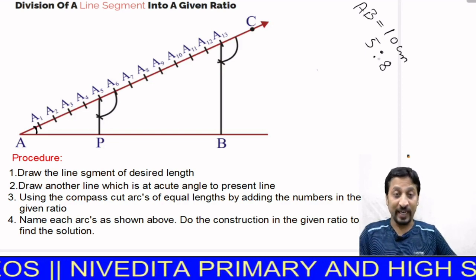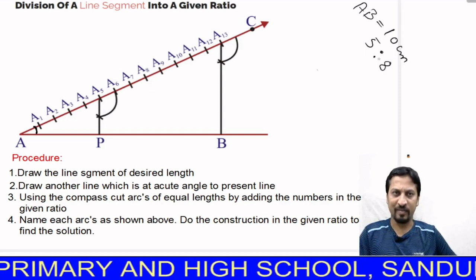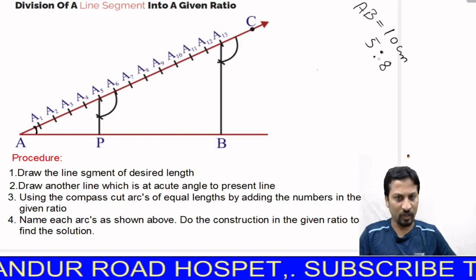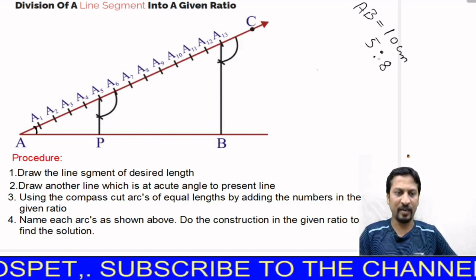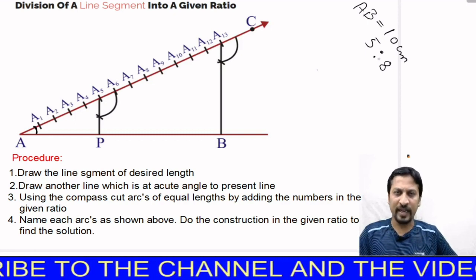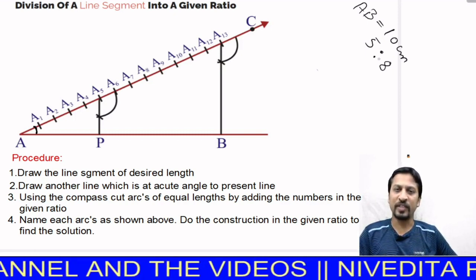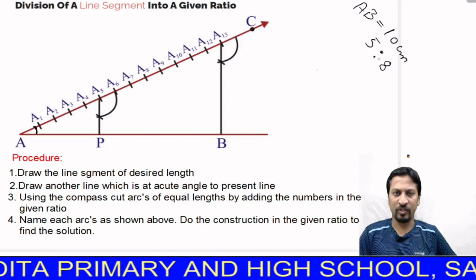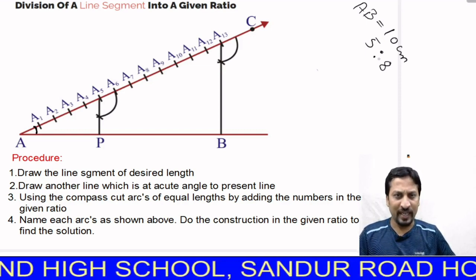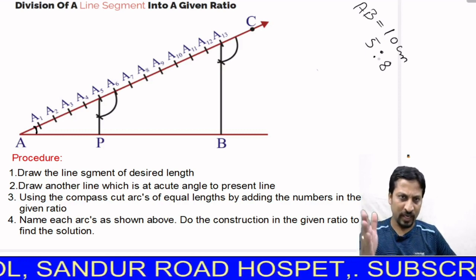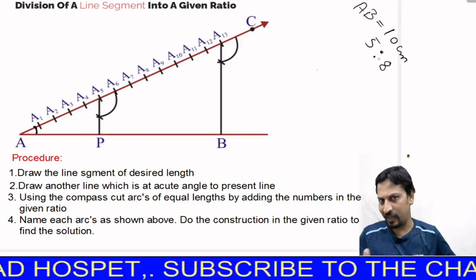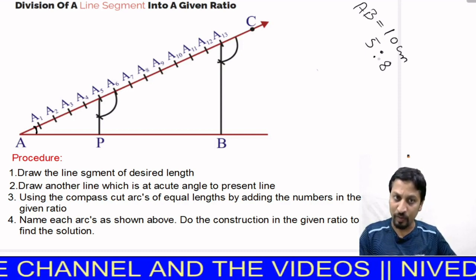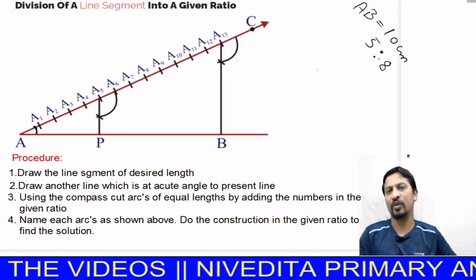First, draw a line segment of desired length — in this problem it is 10 centimeters. Then draw another line at an acute angle to the present line. The first line was AB at 10 centimeters; next, as you can see, there is line AC. There is no specific length for AC — you can choose depending on your page. Make sure it is a little longer because there are many divisions. The important condition is that line AC should make an acute angle with AB and should not cross 90 degrees.